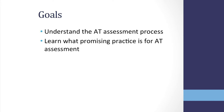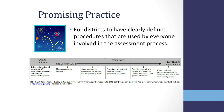The goals of this video are to help schools understand the AT assessment process as well as for them to learn what promising practice is for AT assessment. Promising practice is for districts to have clearly defined procedures that are used by everyone involved in the assessment process. The QIAT self-evaluation matrices can be used to gauge how well a district is doing this. The matrix for AT assessment covers 7 indicators of best practice and ranges on a scale of 1 to 5, with 1 being unacceptable and 5 being promising practice. The matrices can be found at qiat.org as well.